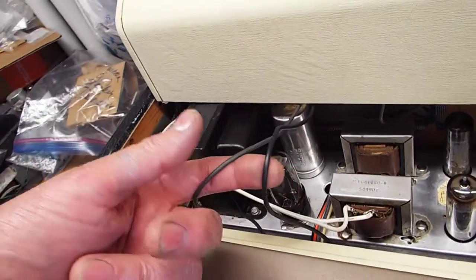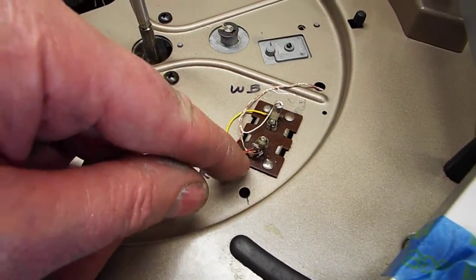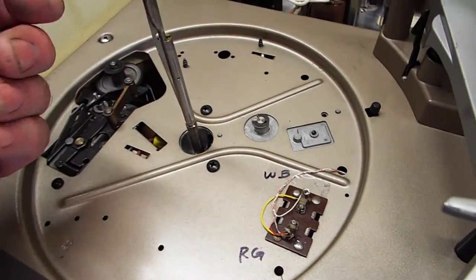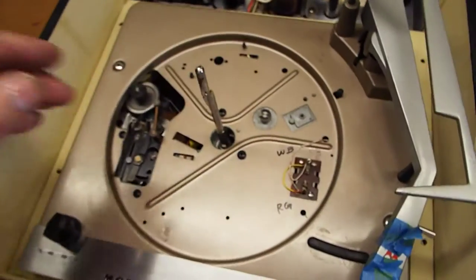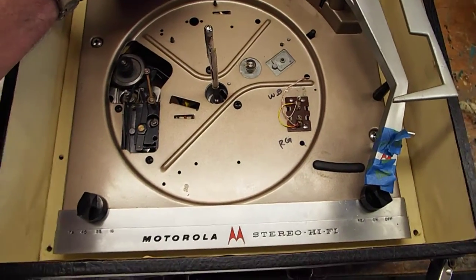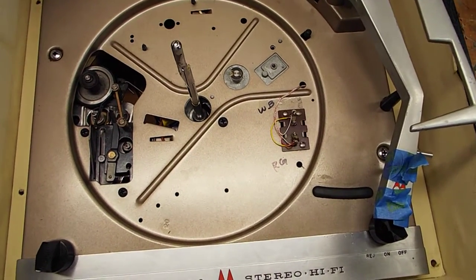And these are the two wires left and right cartridge output, which connect here underneath the changer. I've already removed the six mounting screws. One, two, three, four, five, six mounting screws. And now we can lift the whole deck, including the platter, out of the compartment.